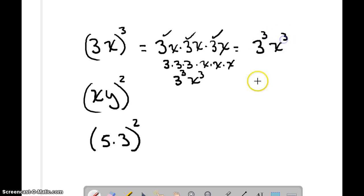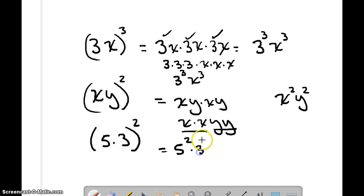So the shortcut would say that I just go x squared, y squared. Again, we can prove that. xy times xy, change the order around, x times x, y times y, x squared y squared. And then the final one, 5 squared times 3 squared. So we're going to have plenty of time to practice that in class tomorrow.